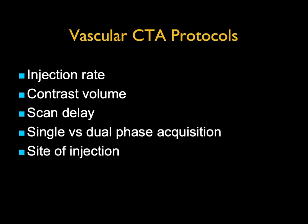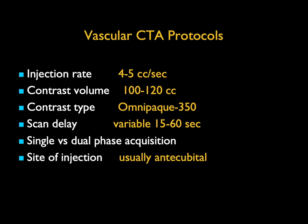Most patients will get single-phase acquisition, but in some cases — particularly once patients have been stented — you'll be doing dual phase. You may even do three phases: non-contrast, arterial, and delayed. When you look for endoleaks, sometimes they're only seen on delayed, not in the early phase imaging. And ideally, antecubital injection is what we always want.